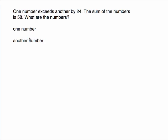One of these phrases has to be what I call the plain old variable, and we have to go back to the sentence to decide who that is. It says one number exceeds another by 24. We would need to know this other number first before we could figure out the one number. So I'm going to call 'another number' x. One number exceeds another by 24 — that's another way of saying this one number is 24 more than the first number. So here are the two names for the variables.